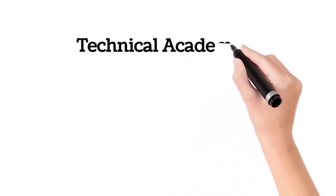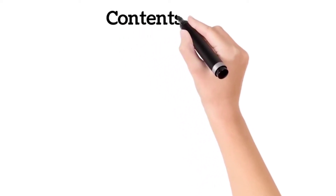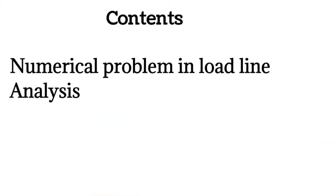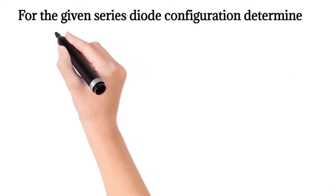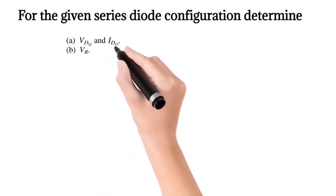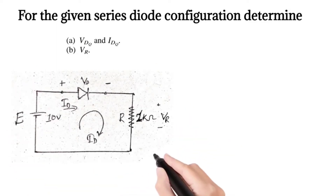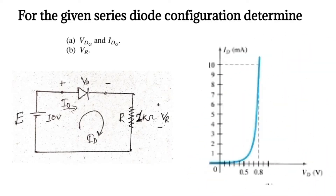Welcome to my channel Technical Academy. I am Kapil Chauhan. In this lecture we will solve one numerical problem related to load line analysis graph. In the previous lecture we studied in detail about the load line analysis of the diode. Here we will solve one numerical problem: for the given series diode configuration, determine the value of VDQ and IDQ, and in part B, find the value of VR. The circuit diagram is given in figure A and the diode characteristic in figure B.